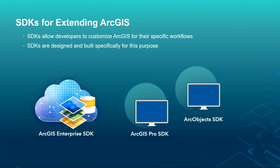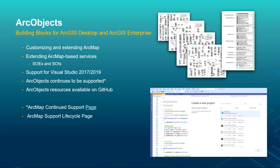When you think about the SDKs used to extend ArcGIS in your enterprise, you're typically going to think about three: the ArcGIS Enterprise SDK, the ArcGIS Pro SDK, and the ArcObjects SDK. ArcObjects are the building blocks for ArcGIS Desktop and ArcGIS Enterprise — you can customize ArcMap and extend it, and build ArcMap-based SOEs and SOIs for ArcGIS Enterprise. ArcObjects continues to be supported in Visual Studio 2017 and 2019.